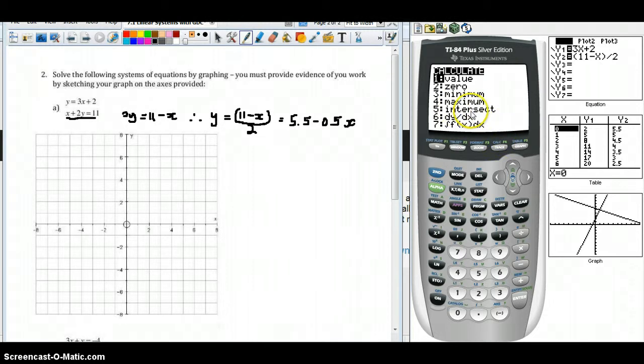We're interested in number 5, we're going to calculate the intersection. To calculate the intersection, we're going to either toggle down using your cursor keys to number 5, or we could push the number 5, and we'll hit enter. You can graph multiple functions on one set of axes, in fact up to 10. The calculator needs to know which curve. In the top left corner Y1, that's one of our functions, so we hit enter. In this case it automatically moves to the second function because there are only two functions graphed. We'll hit enter again.